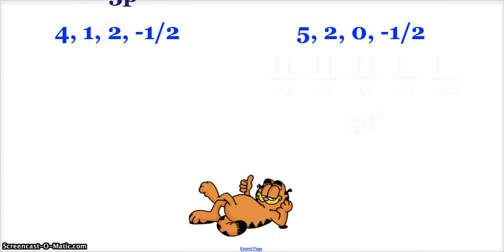How about this set? 4, 1, 2, negative 1 half. Energy level 4. 4 sublevels, S, P, D, F, 0, 1, 2, and 3. So this 1 is completely valid. 1 represents a P sublevel. There's 3 orbitals, and they are labeled negative 1, 0, and positive 1. Uh-oh. This 2 is not valid. The third quantum number has to be between negative and positive of the second quantum number. So that is invalid.